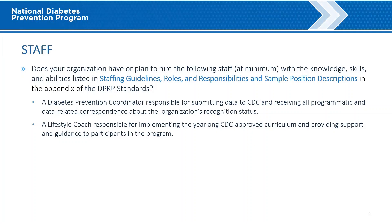Staff. Staffing requirements and responsibilities are listed in the appendix of the DPRP Standards. The capacity assessment explores if your organization has hired or plans to hire a program coordinator, lifestyle coaches, and a data preparer with the knowledge, skills, and abilities listed in the guidance document in the appendix of the DPRP Standards, entitled Staffing Guidelines, Roles, and Responsibilities, and Sample Position Descriptions.